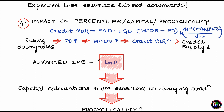This means that capital calculations, when the relationship between LGD and PD has been properly accounted for, become even more sensitive to changing economic conditions. So as a downturn comes, the credit VaR increases by a lot more than it does for the case when LGD is held constant. Because of this relationship between LGD and PD, the pro-cyclicality behavior becomes even more extreme.